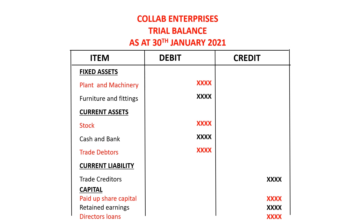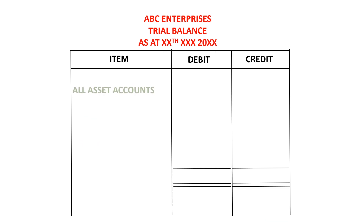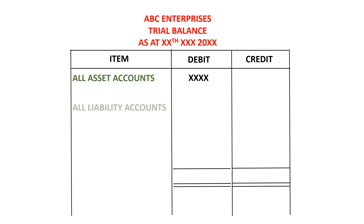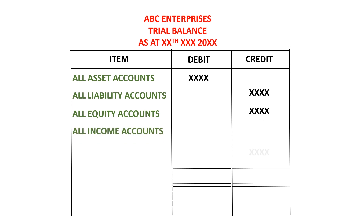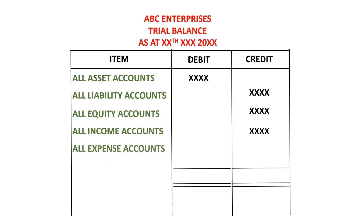The general rules when we are writing a trial balance are: all asset accounts will have debit balances, all liability accounts will have credit balances, all equity accounts will have credit balances, all income accounts will have credit balances, and all expense accounts will have debit balances.